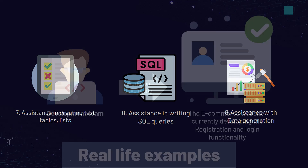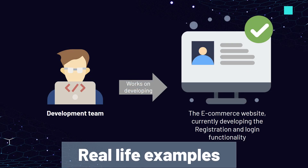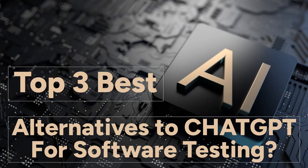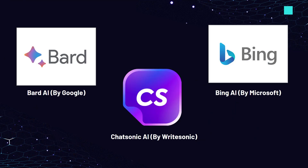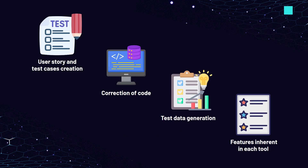Each of these aspects of using ChatGPT for software testing is shown in real-life examples to better understand the purpose of using this tool. Also, in the course, we'll discuss the top 3 AI alternatives to ChatGPT for software testing. In particular, we'll take a look at alternatives such as Bard AI by Google, Bing AI by Microsoft, and Chatsonic AI by Writesonic, considering how these AI tools help in solving the same testing tasks such as user story and test case creation, correction of code, and test data generation, as well as several features inherent in each tool.